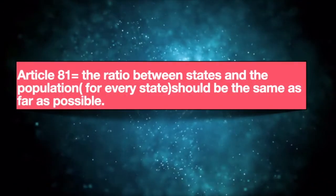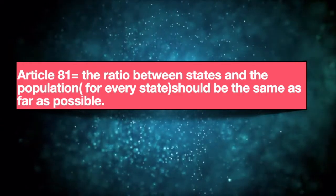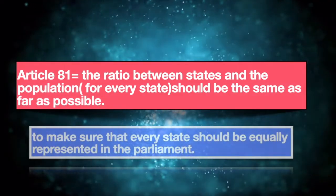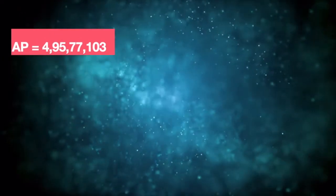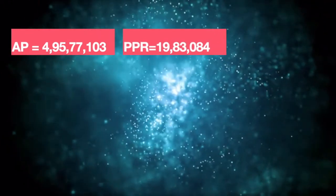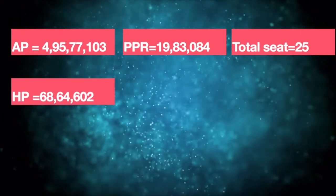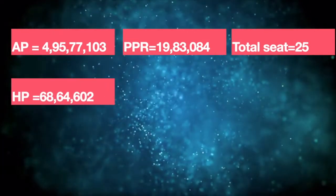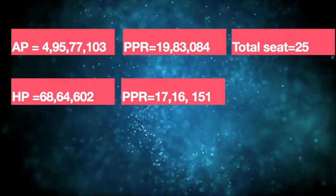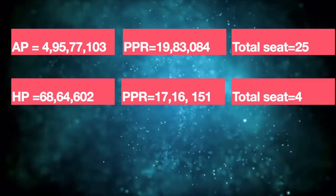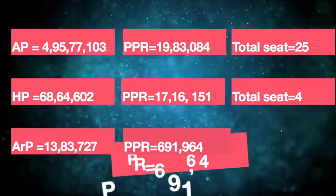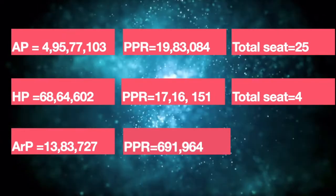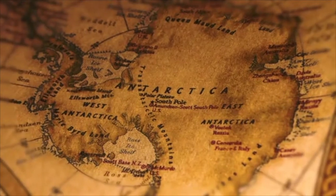Why is a certain number — say 543 — allocated? Reason number one: on the basis of population. Article 81 mandates that the ratio between seats and population for every state should be the same as far as possible, to ensure that every state is equally represented. For example, Andhra Pradesh has a population of 4 crore 95 lakh 77,103 — people per seat: 19 lakh 83,084 — giving the state 25 seats. Himachal Pradesh has a population of 68 lakh 64,602 — people per seat: 17 lakh 16,151. But Arunachal Pradesh has a population of 13 lakh 83,727 with people per seat of 6 lakh 91,964 — which means these allocations are not absolutely fair.